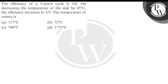The question is: the efficiency of a Carnot cycle is 1/6. On decreasing the temperature of the sink by 65 degrees Celsius, the efficiency increases to 1/3. The temperature of the source is what? So we look towards the question — it has been said that the efficiency of the Carnot cycle is 1/6, and on decreasing the temperature of the sink...